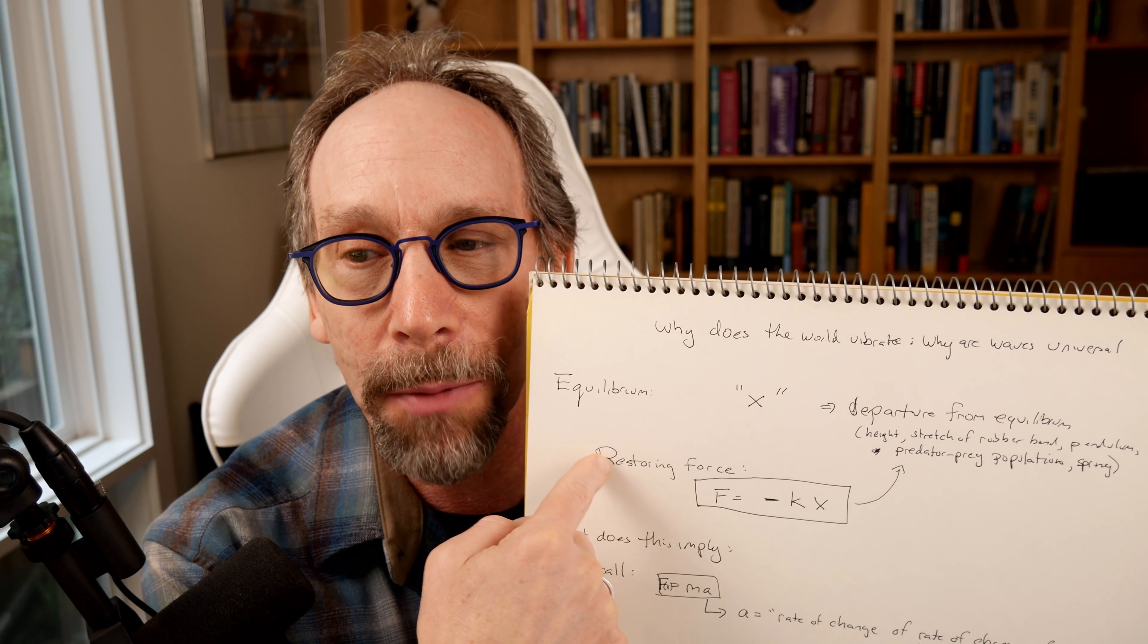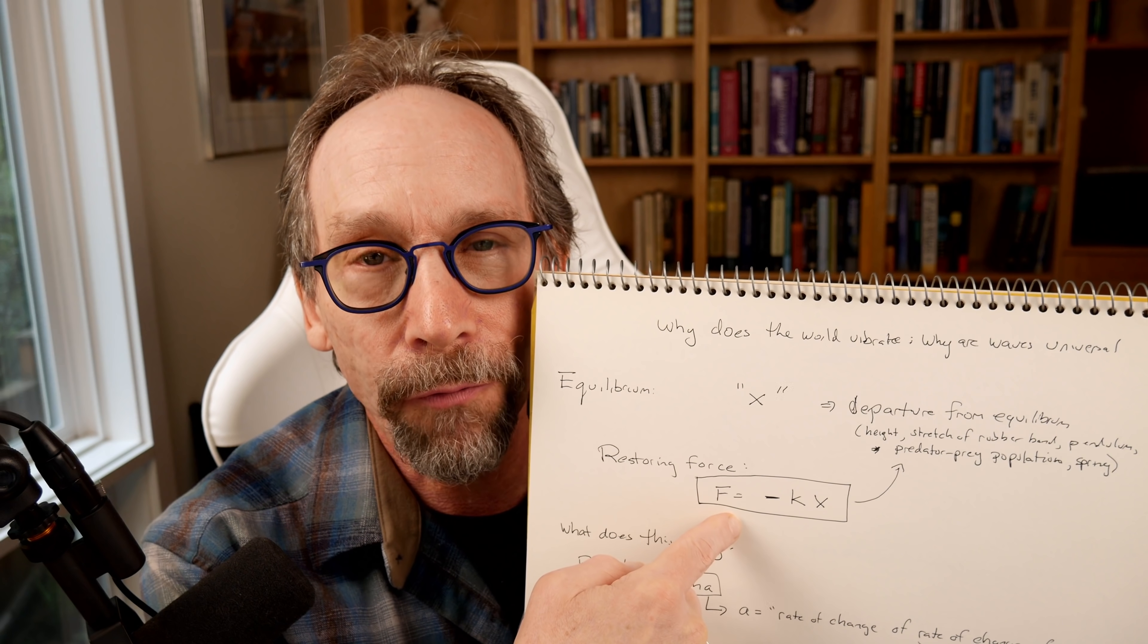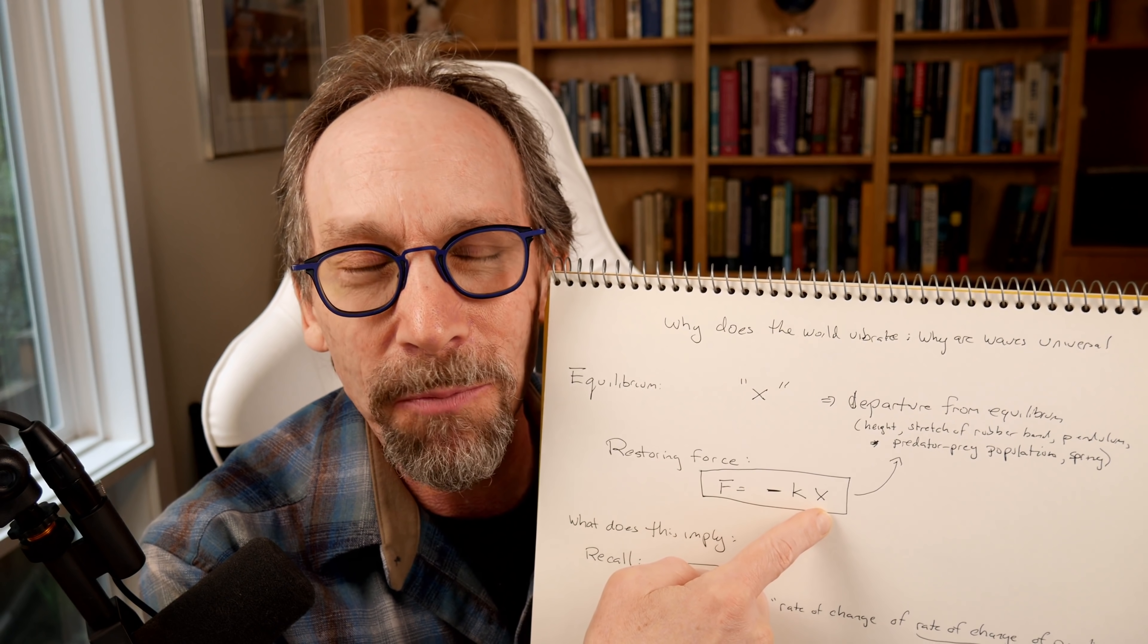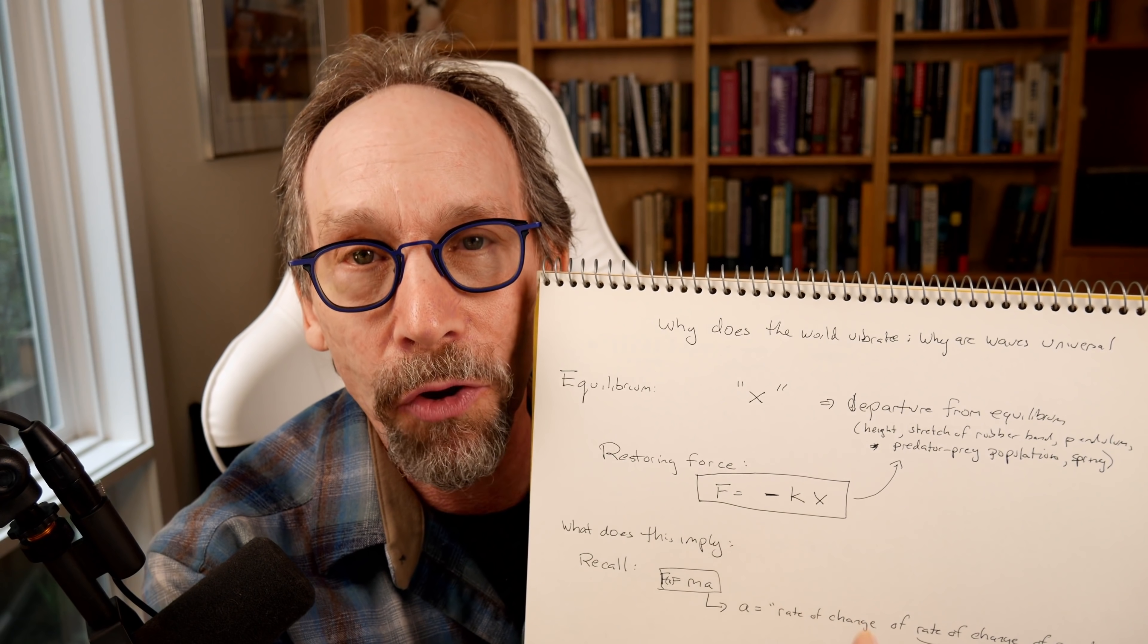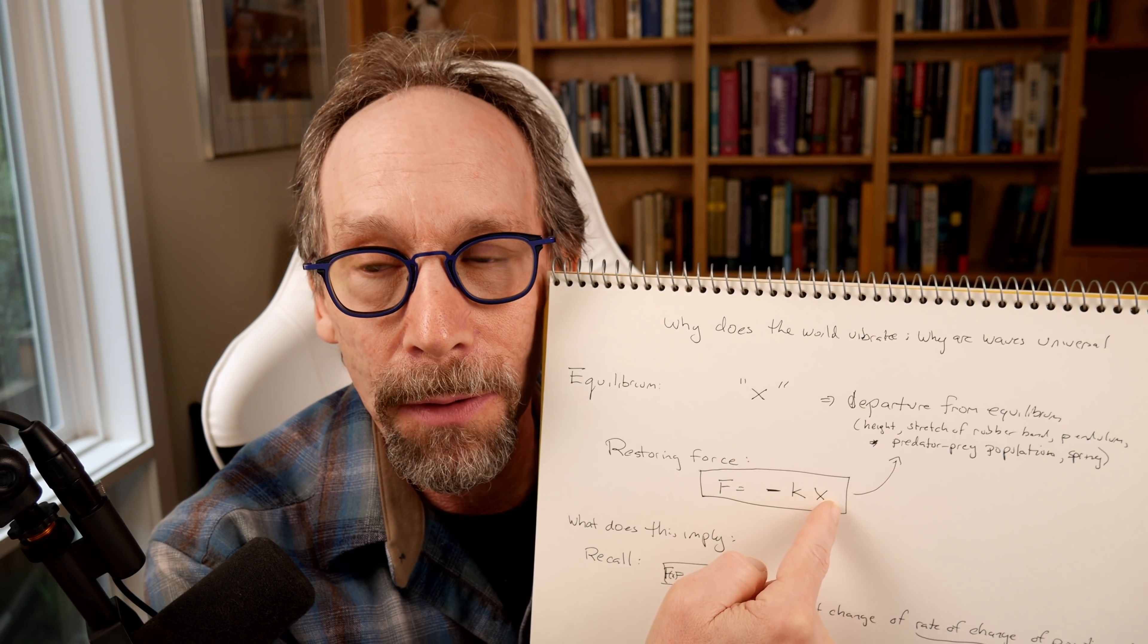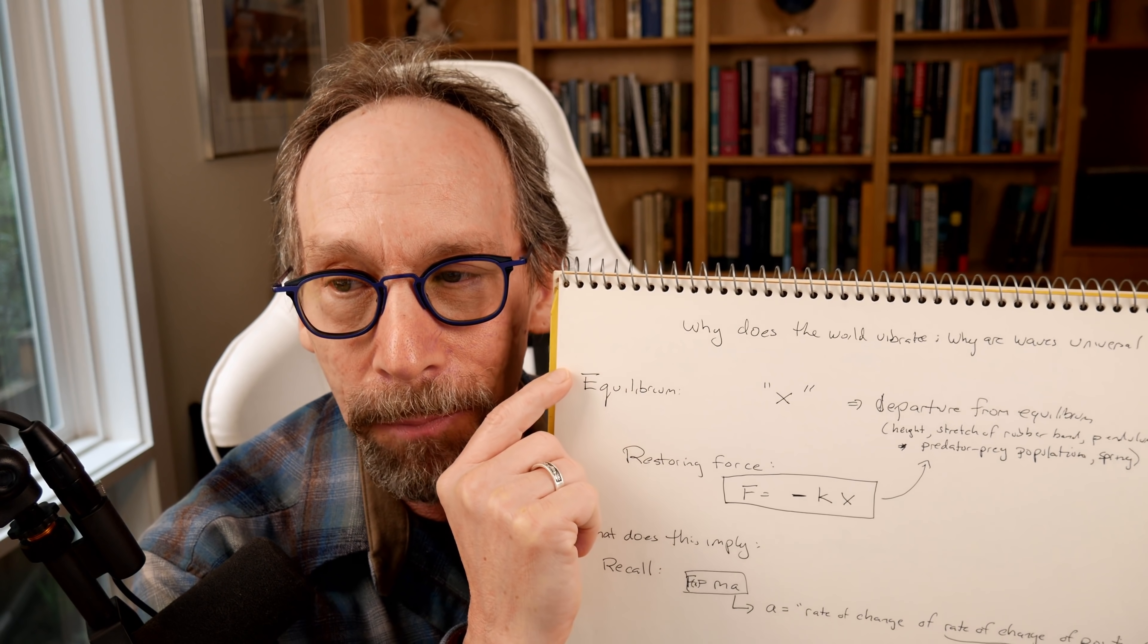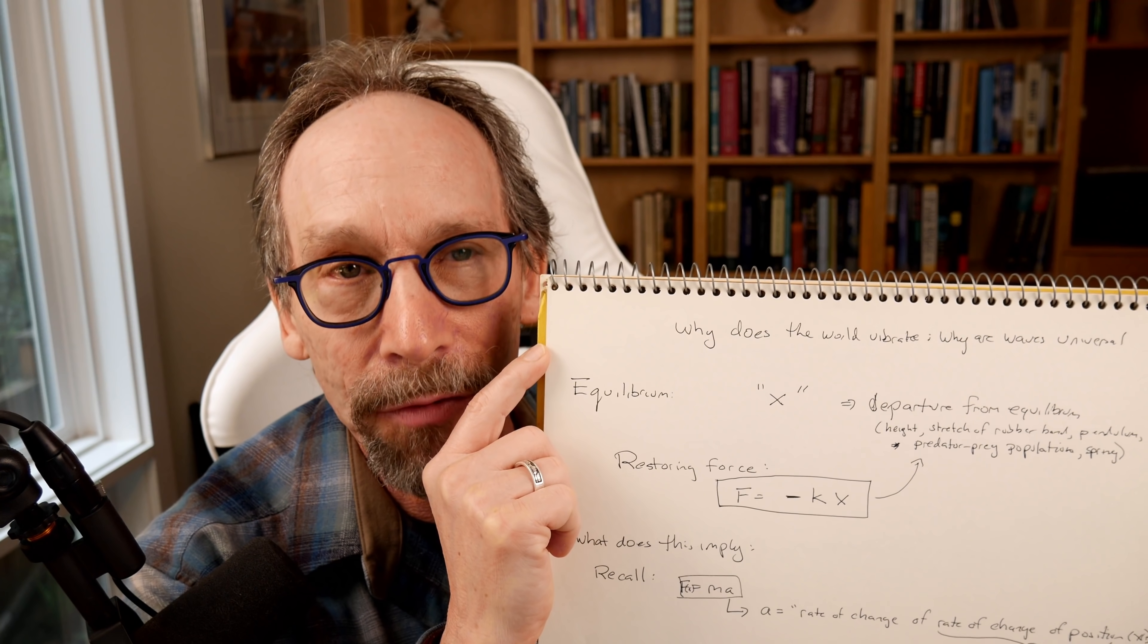And the whole point of equilibrium is that nature has a restoring force. There's a force that's proportional to minus some constant times the departure from equilibrium. The further you are away from equilibrium, the greater is the restoring force. When you're at equilibrium, when x is zero, the force is zero. So the system wants to remain where it is. It's really that simple. All of nature has restoring forces to keep things in equilibrium.